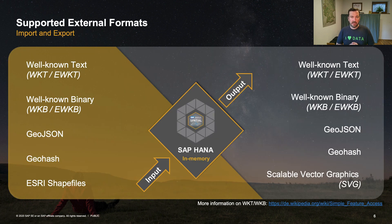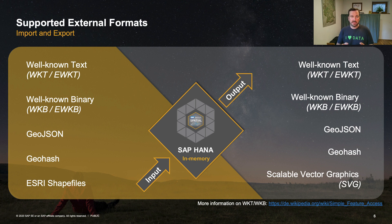Regarding input and output formats for geospatial data in SAP HANA, we offer support for well-known text and well-known binary. Both are defined by the Open Geospatial Consortium, meaning a geometry in WKT or WKB can be read or consumed by most GIS software. We also offer support for GeoJSON and geohashes. You can import ESRI shapefiles directly into SAP HANA using the import statement at the SQL script level. On the output side, you can output geometries as ready-to-consume SVG.